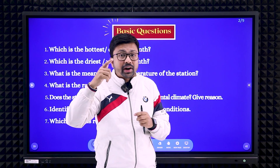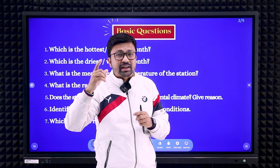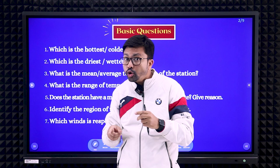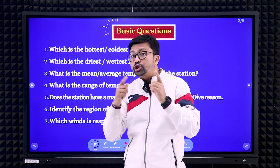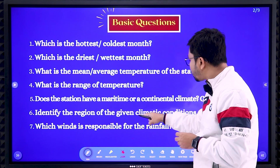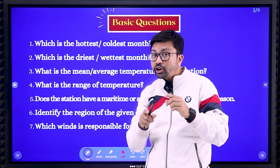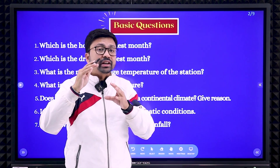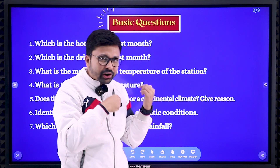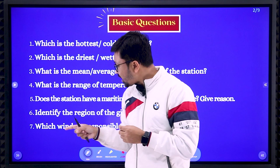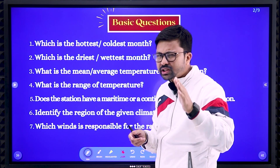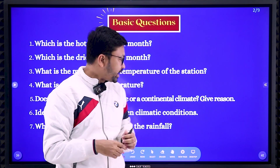Continental climate means where the temperature is maximum in the summer season — too hot — and in the winter season the temperature is too low. That is why it is also called extreme climatic condition. Next, to identify the regions of the given climatic condition and which winds are responsible for that type of rainfall, I'll give you the simple tricks in the next slides.